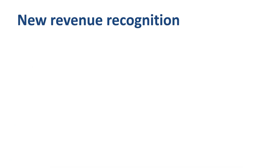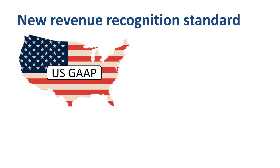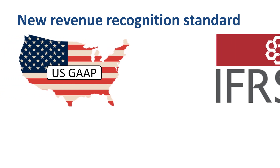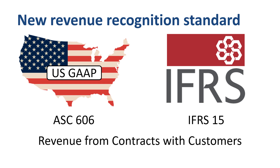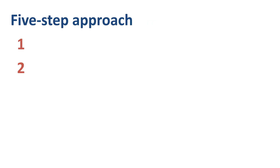The principles and rules for recognizing revenue are laid down in the new Global Revenue Recognition Standard, effective in 2018, which is ASC 606 in US GAAP and IFRS 15 in IFRS, Revenue from Contracts with Customers. There is a 5-step approach for revenue recognition in both of these accounting standards.